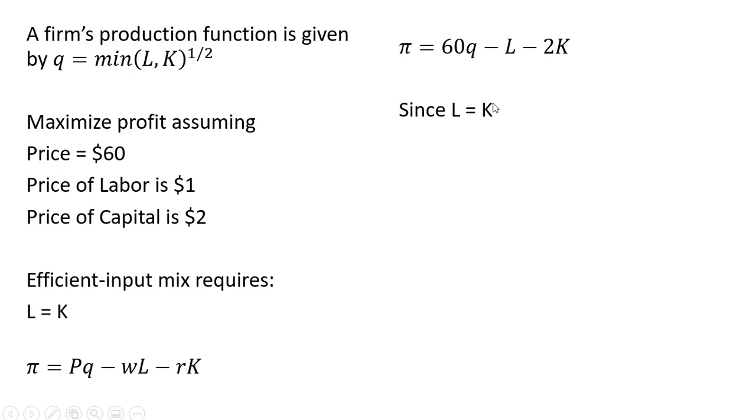And then since L equals K, we can change this K to an L. And now for the Q, we're going to note here that the quantity of output is just going to be L to the 1/2 power, which is the same thing as K to the 1/2 power, since the firm will use equal quantities of labor and capital. And so we're going to make our substitution in for Q. We're going to put in L to the 1/2 power.